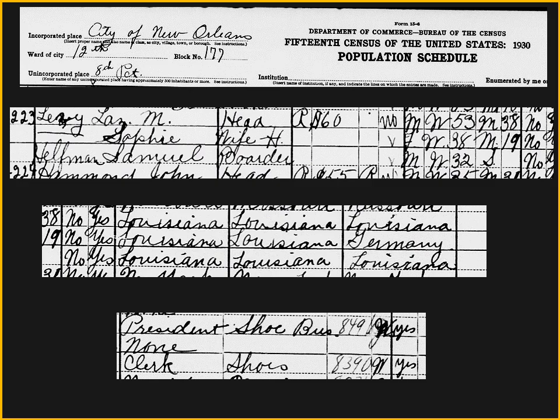I did more record searching for Sam, which became a lesson in why one shouldn't trust documents where you don't know the source. The 1930 census showed Samuel Helfman living with the president of a shoe business, working as a clerk. But the record listed his birthplace and his parents' birthplace as Louisiana — which is completely wrong. So records can mislead you even when you think you've found your person.